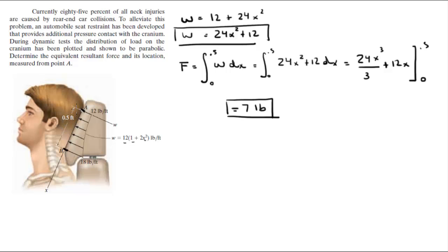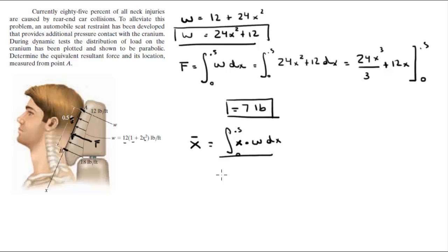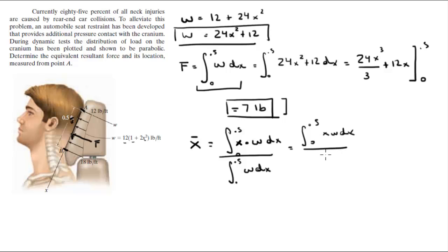Now you need to find the distance where this force acts. To find that distance, let's call it x-bar — the distance from A. x-bar is given by the integral of x times the function dx from 0 to 0.5, divided by the integral from 0 to 0.5 of w dx. The bottom we already found — it's 7 pounds — so this equals the integral from 0 to 0.5 of x·w dx, over 7.